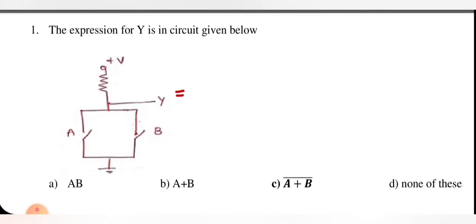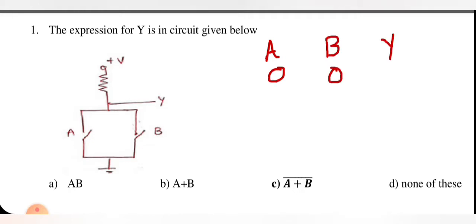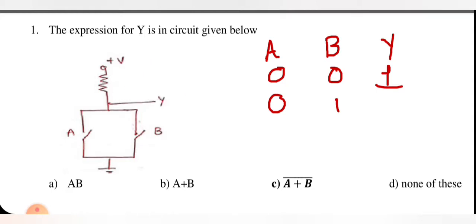First of all we need to check the truth table. If both inputs are 0, then the switch will be open and the total voltage will appear at Y — we will get high. Now if A is equal to 0 and B is equal to 1, then A will be open and B will be short. If B is short then the voltage path will be switched through to ground, and we will get output Y equal to 0.